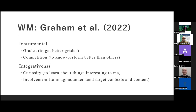Regarding Graham et al., they also explore two main motivation types: instrumentality and integrativeness. Instrumentality includes grades — to get better grades — and competition — to perform better than others. Integrativeness also includes two subcategories: curiosity, to learn about interesting things, and involvement, to understand target context and content.